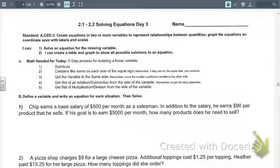The objectives are to solve an equation for the missing variable and to create a table and graph to show all possible solutions to an equation. We also will be writing an equation based on a word problem, and you'll see that in numbers 1 and 2. That's where we're going to start.